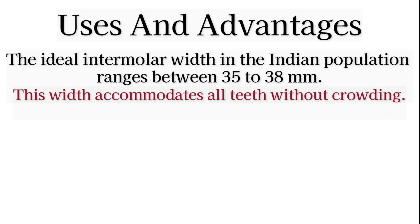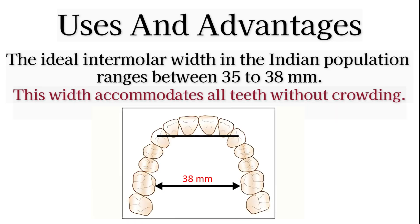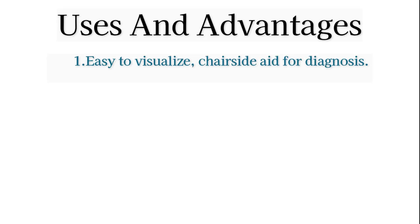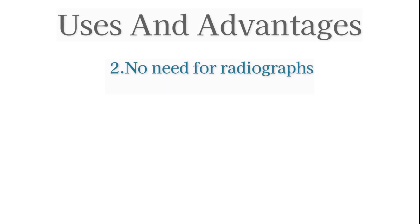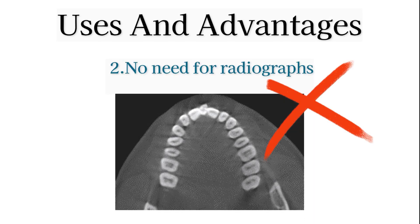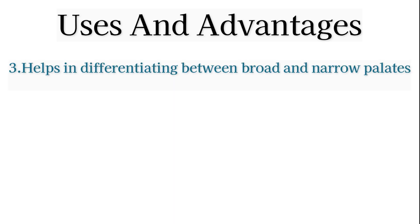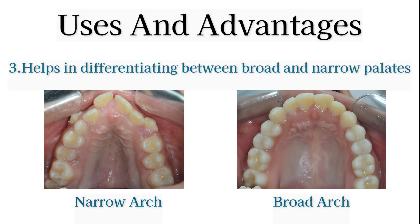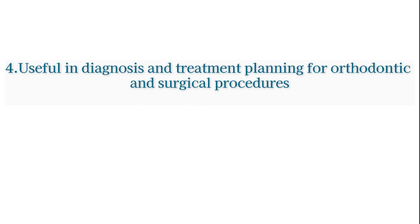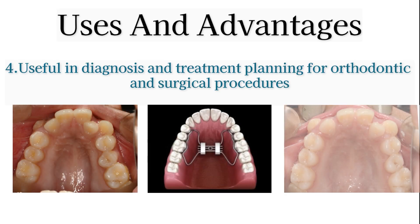This norm has many advantages. When it is 35 to 38 mm, it can accommodate all teeth without crowding. It is an easy-to-visualize chairside aid for diagnosis, with no need for radiographs. It helps in differentiating between narrow and broad palates, and is useful for treatment planning for orthodontic and surgical procedures.